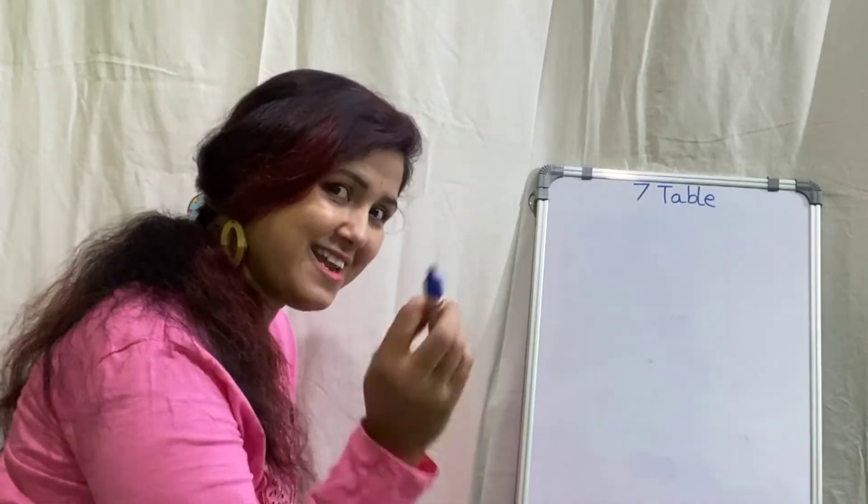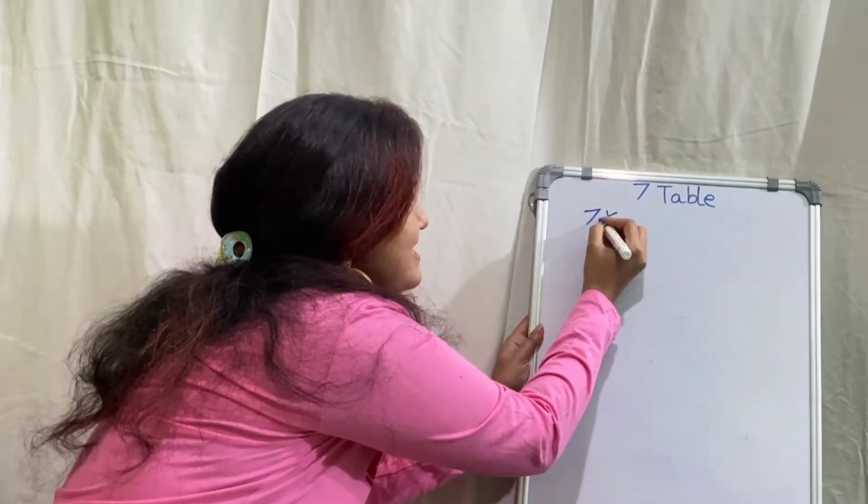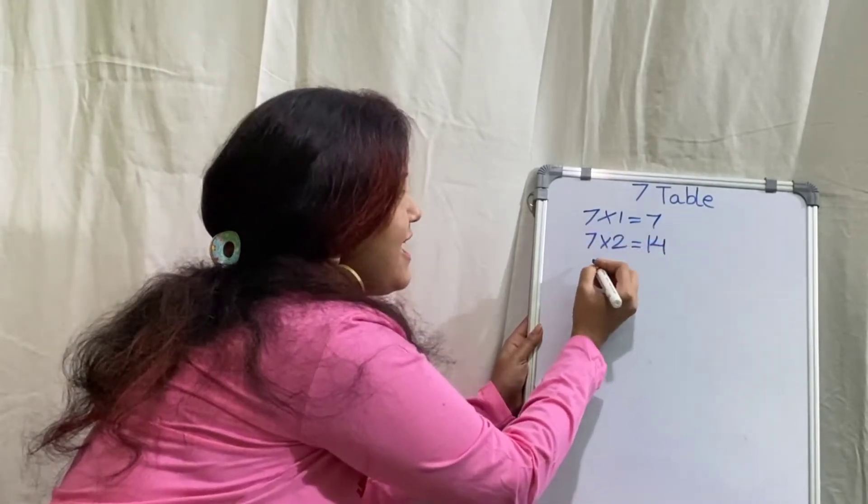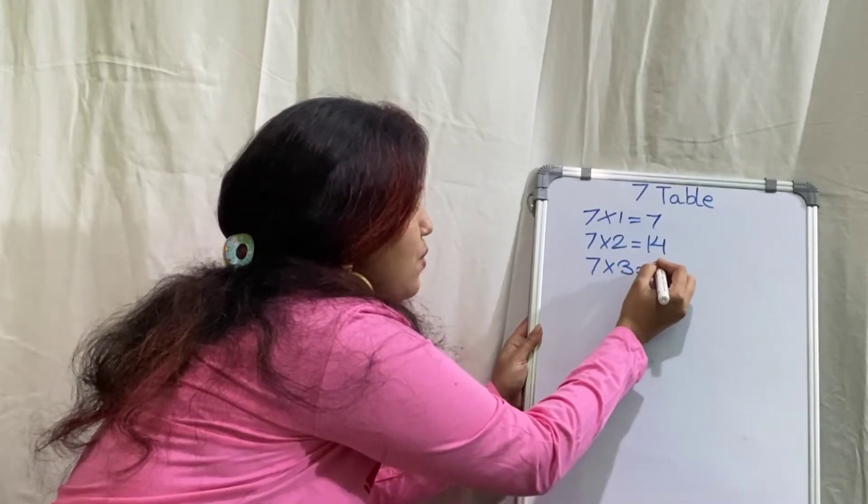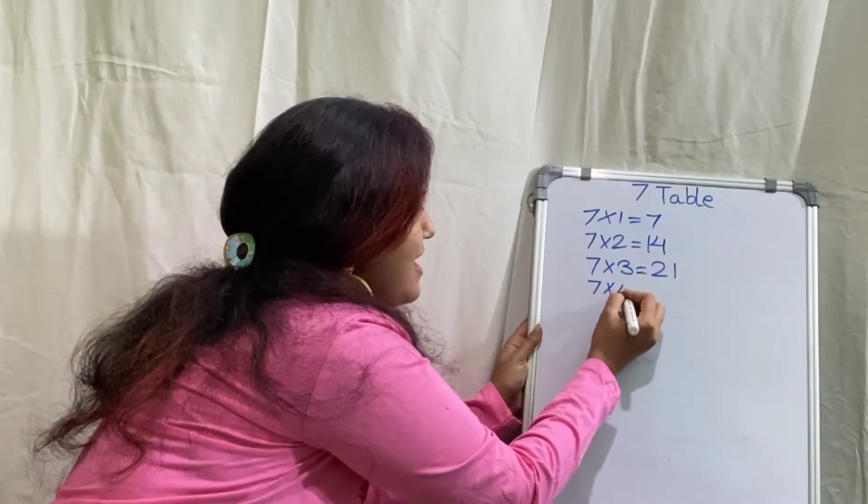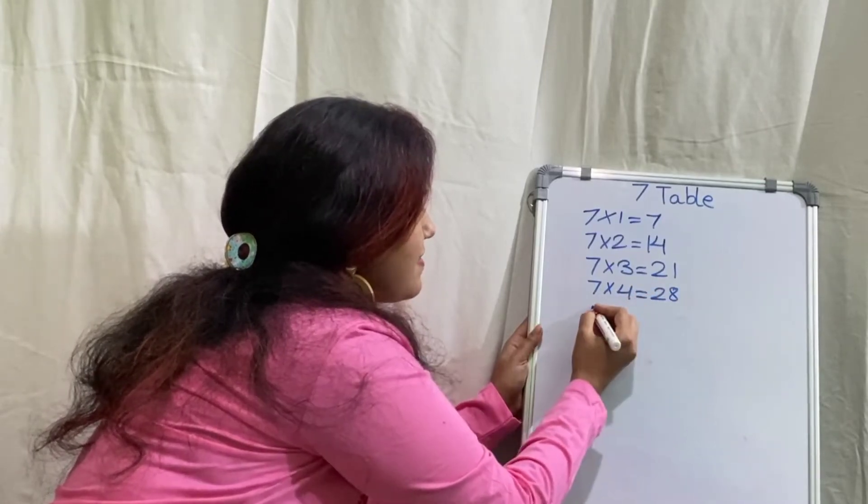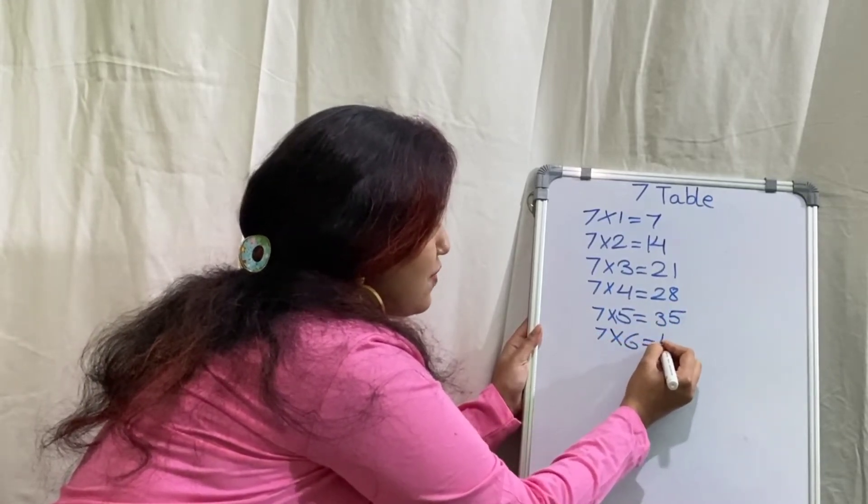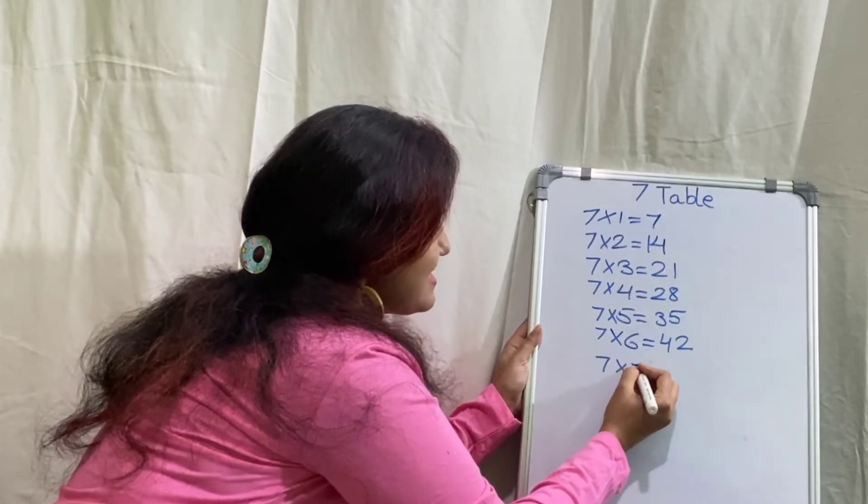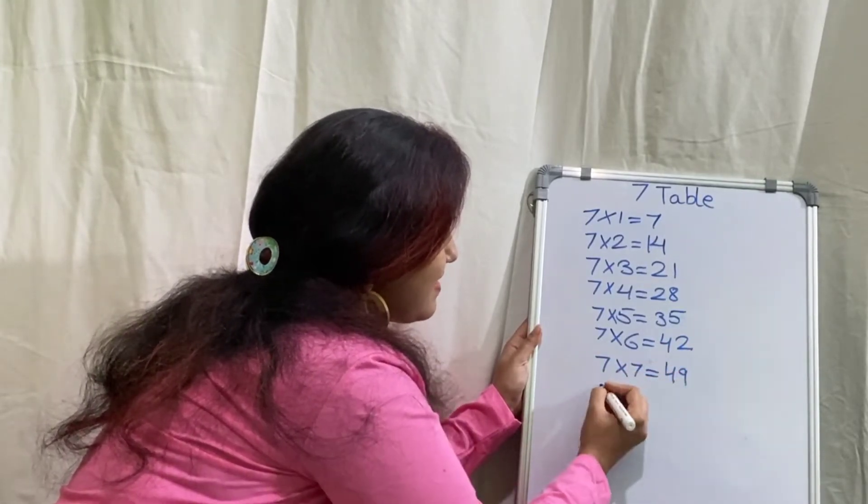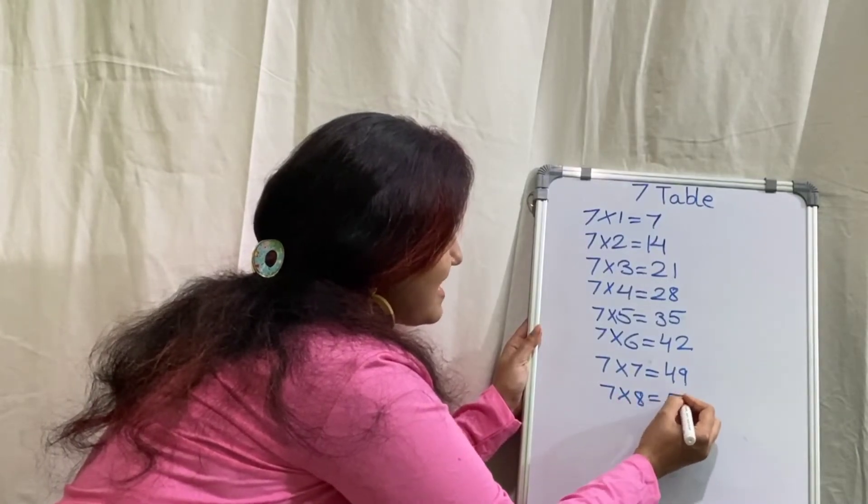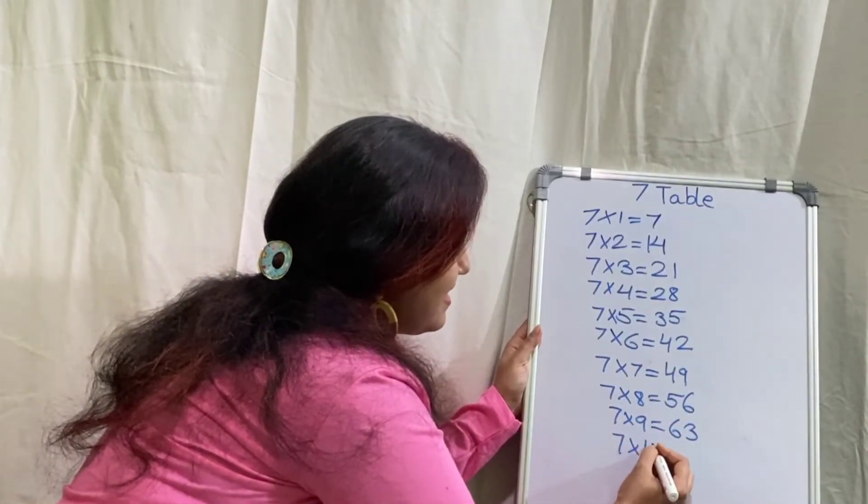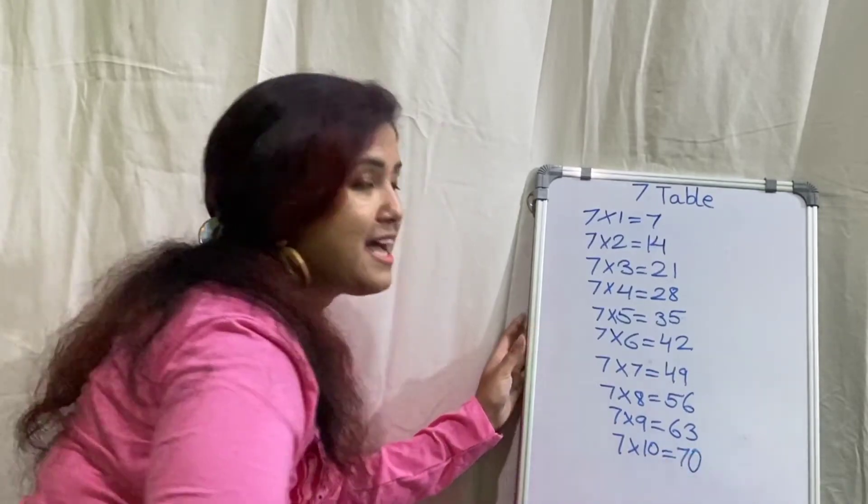So let's start learning. Seven ones are seven, seven twos are fourteen, seven threes are twenty-one, seven fours are twenty-eight, seven fives are thirty-five, seven six are forty-two, seven sevens are forty-nine, seven eights are fifty-six, seven nines are sixty-three, seven tens are seventy.